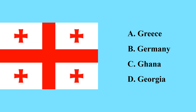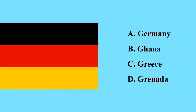This is the flag of Georgia — Georgia is a transcontinental country between Asia and Europe. This is the flag of Germany — Germany is a country in Europe and is actually the richest country in Europe by GDP.